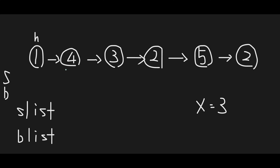Let me explain with this example: 1, 4, 3, 2, 5, 2 — this is our original input list. First of all, I initialize S list for small values and B list for big values, and I copy each to a dummy list. X equals 3. Basically I iterate through all nodes one by one until head is null.